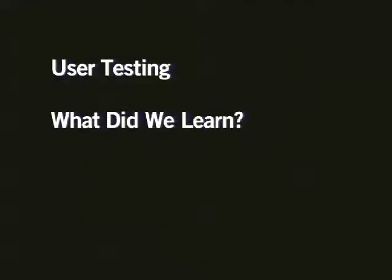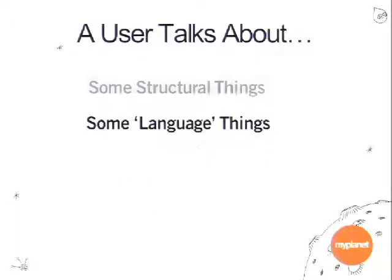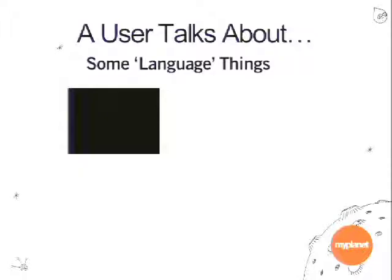We did user testing and learned things in two categories: some structural, some about the arrangement of elements and interaction methods. But there were also a lot of things about the language used in the interface that gets people through it. I want to focus on that. I'm going to play a couple of clips — very articulate feedback from one of the testers. He said precisely what we needed to hear in terms of feedback around these issues.